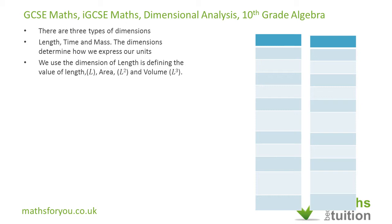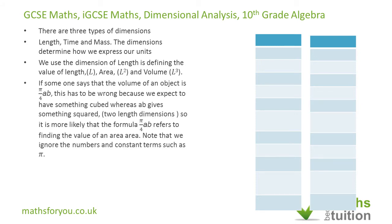Suppose somebody drafts a formula and says pi over 4 times AB is the formula for the volume of an object. That is clearly wrong, because you have just A times B, which gives you length squared — so this is a formula for area, certainly not volume. Length times length gives you length squared. Note that pi and 4 do not matter at all because those are constants — what we're concerned about are the variables A and B.